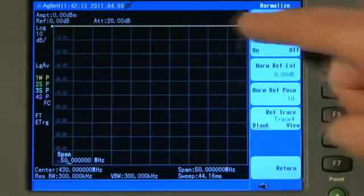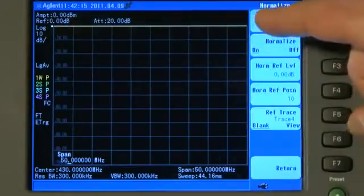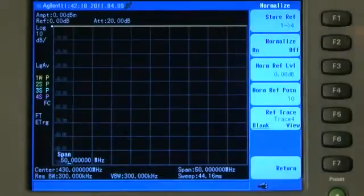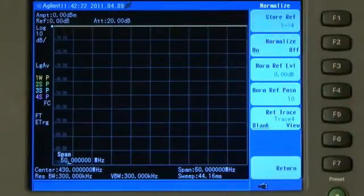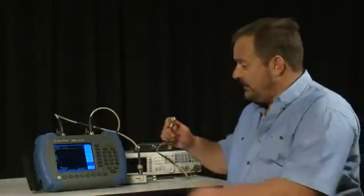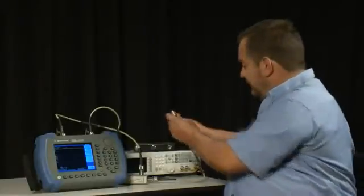And you will see that the trace now has normalized and calibrated itself to remove all the errors from the cable and the bridge. And the trace is at 0 dB at the top of the display. I will now remove the short circuit and reconnect the filter.